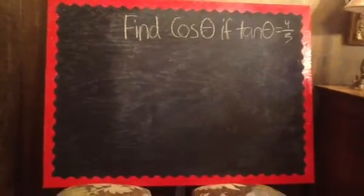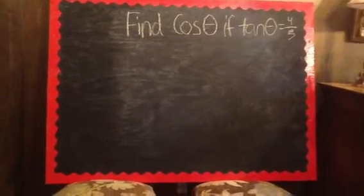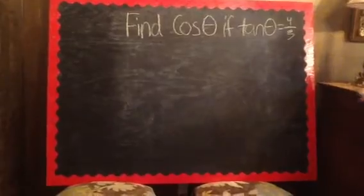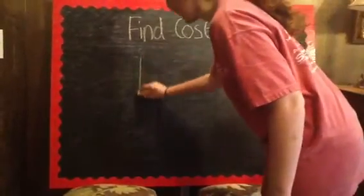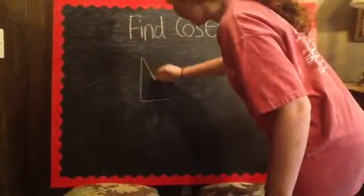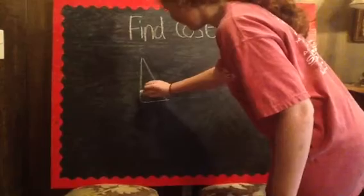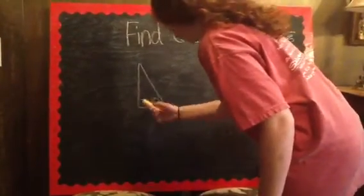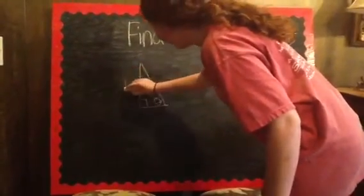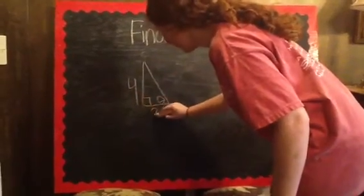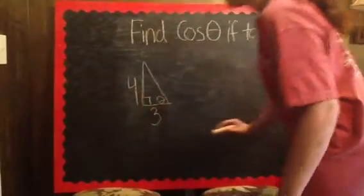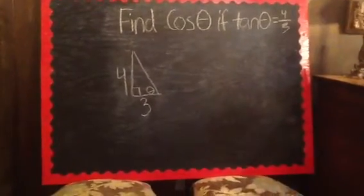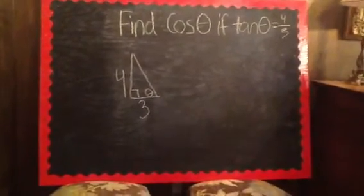To find the cosine of theta, first draw a triangle and fill it out with the information provided. Tangent equals opposite over adjacent, so you plug that into those spots in the triangle. To find the missing side,